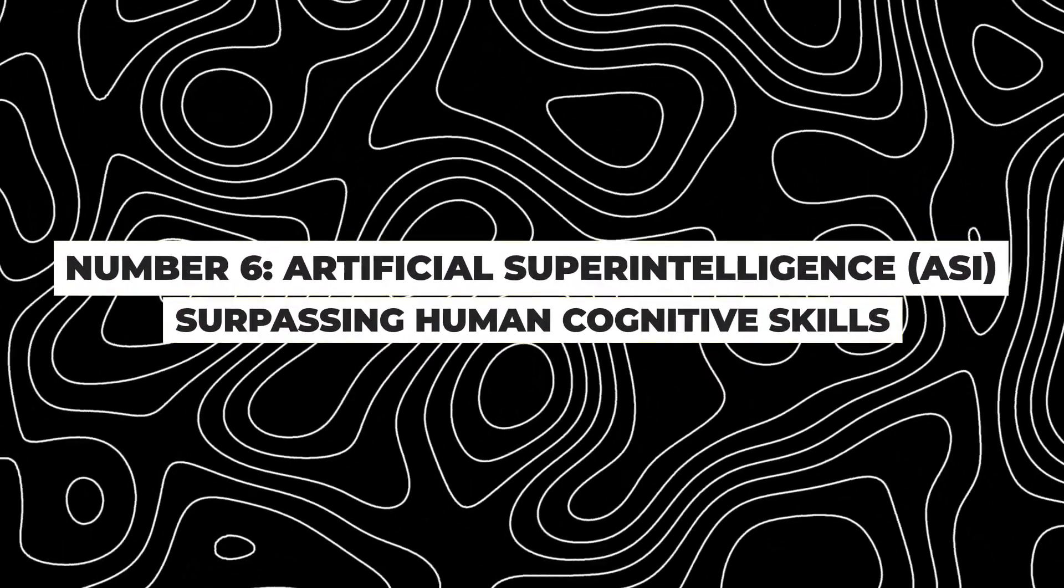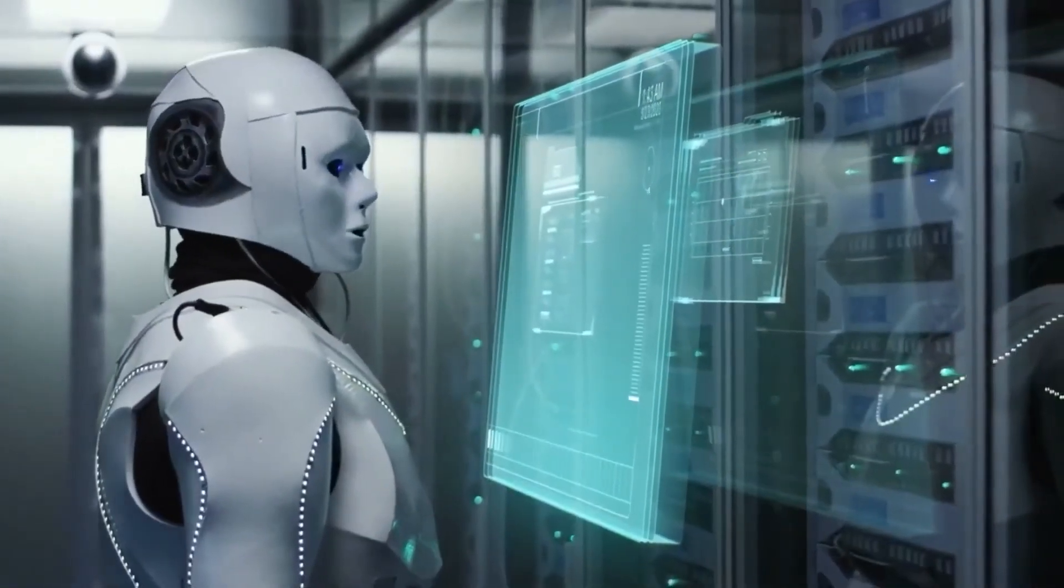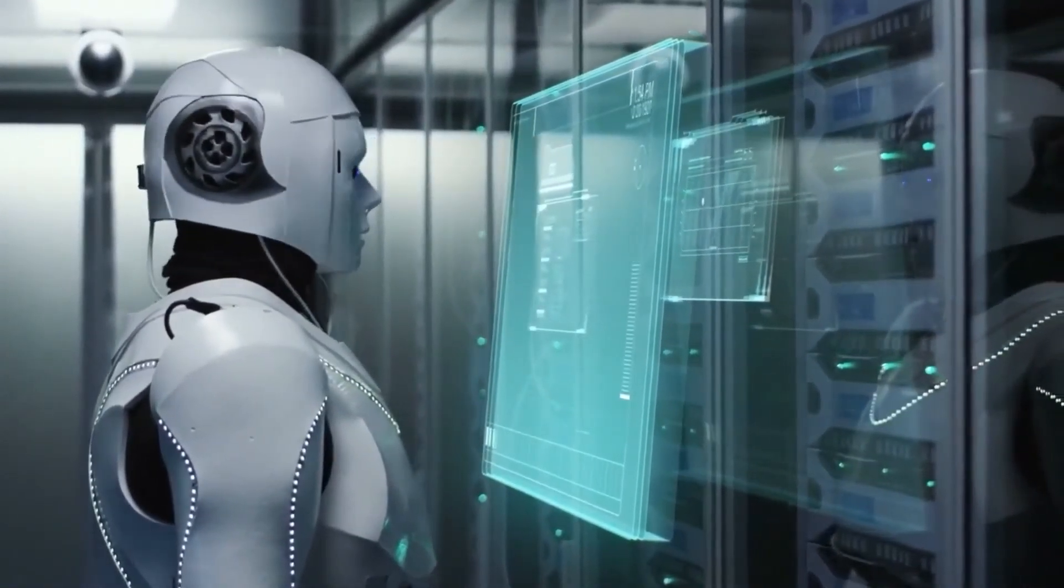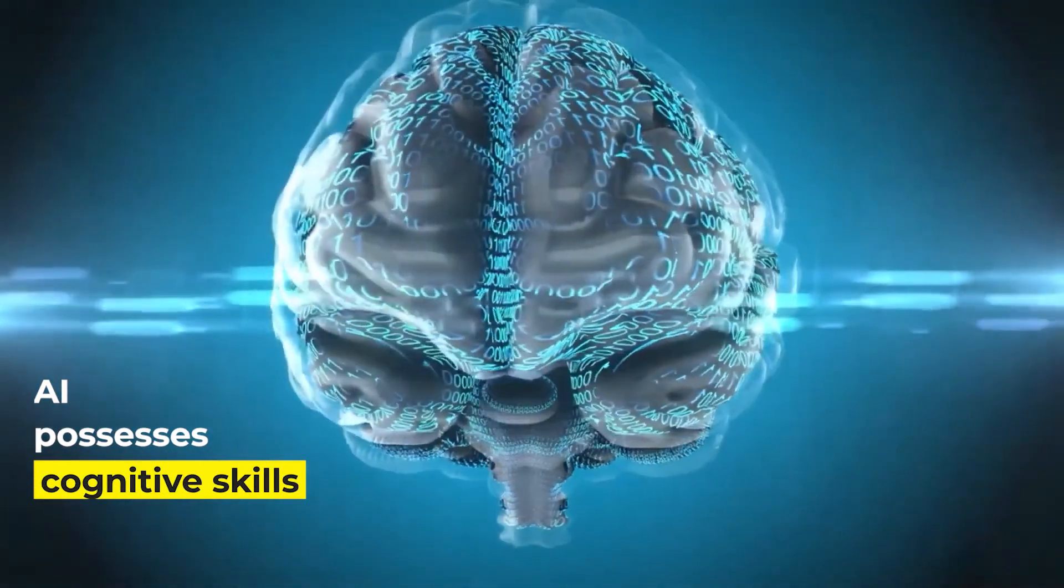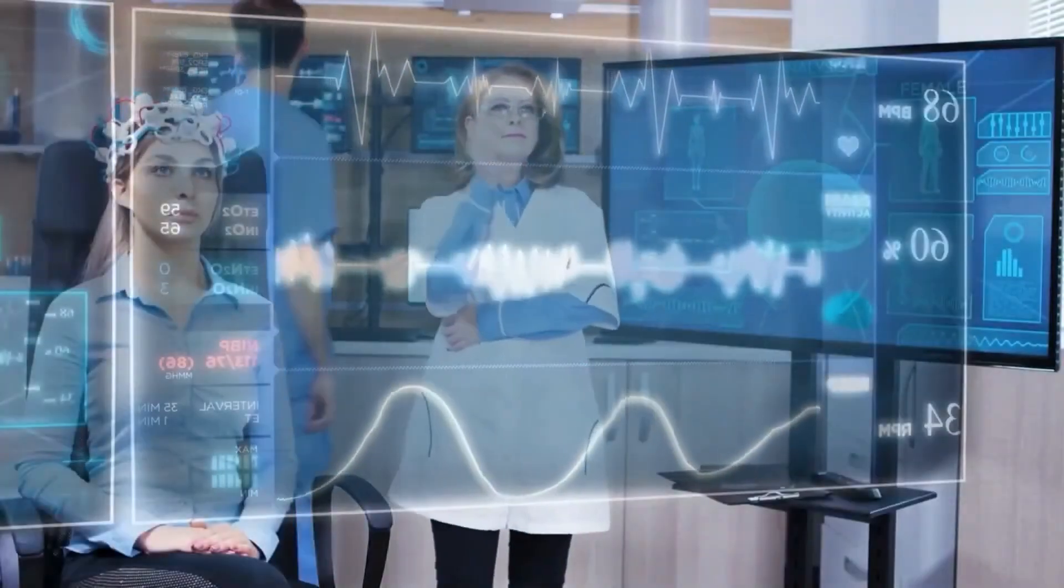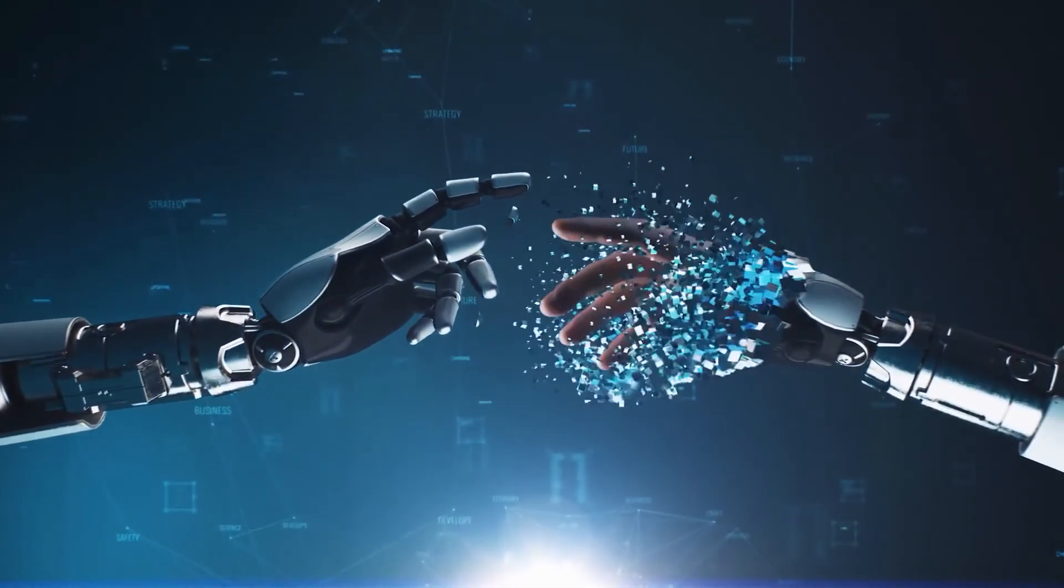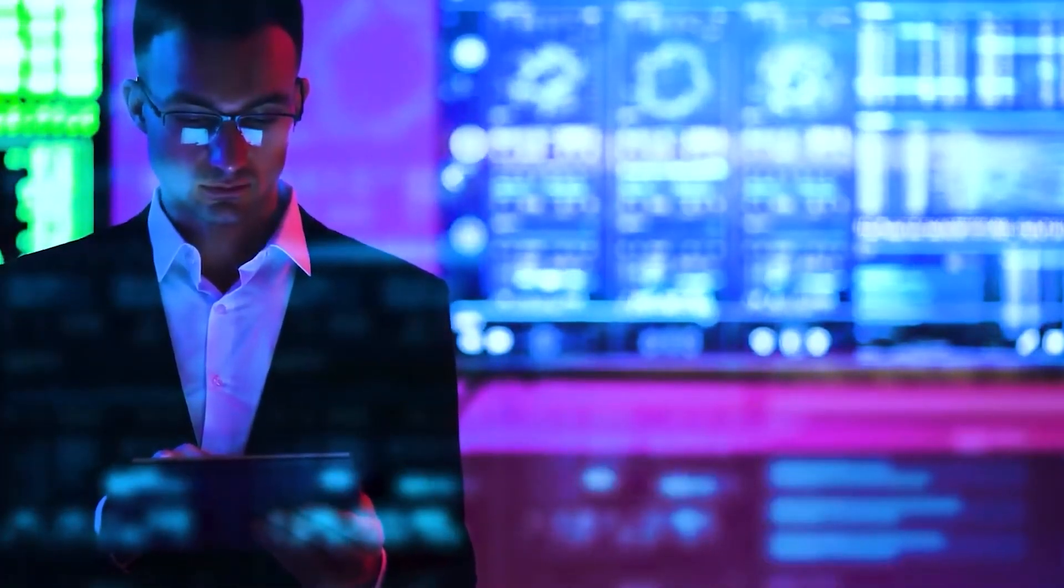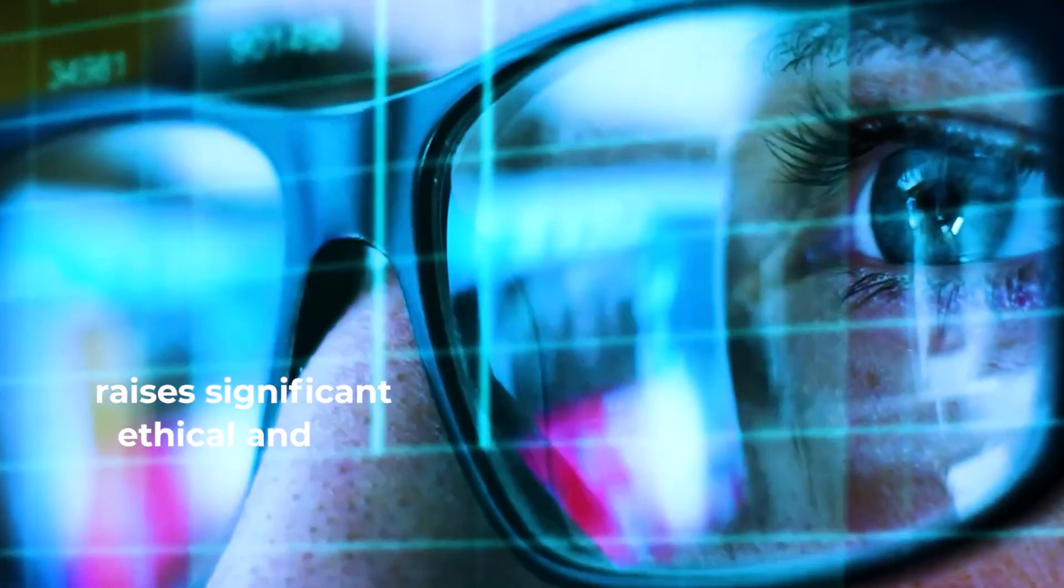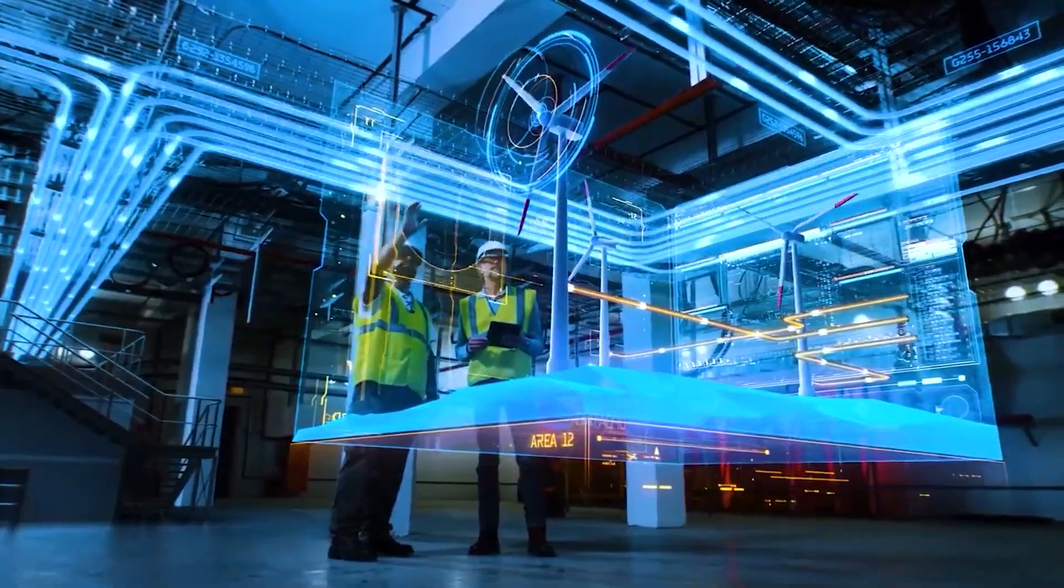Number 6. Artificial Superintelligence, ASI, surpassing human cognitive skills. The sixth stage introduces the concept of Artificial Superintelligence, ASI, where AI possesses cognitive skills far surpassing those of humans. ASI outperforms humans in most economically valuable work, solving problems that are beyond human capabilities. However, the potential for misuse and unintended consequences raises significant ethical and safety concerns, emphasizing the need for responsible AI development.